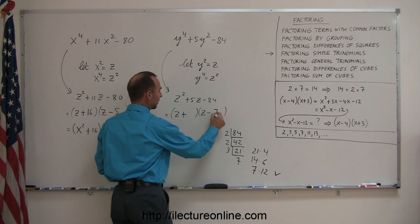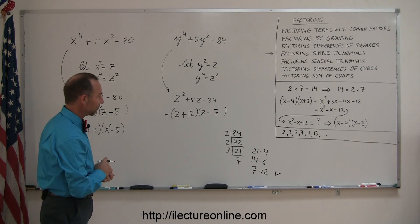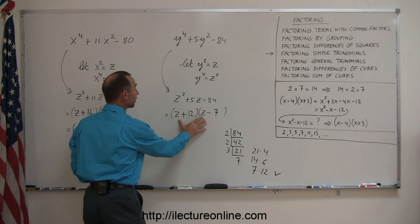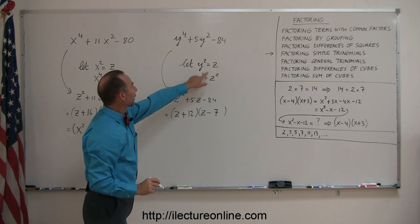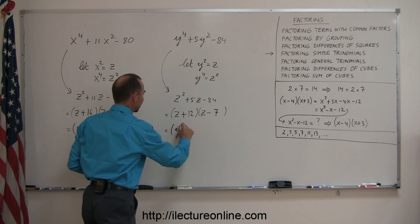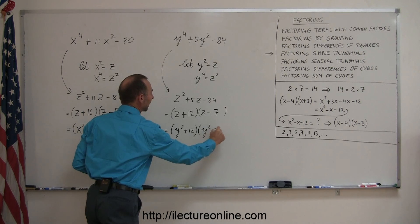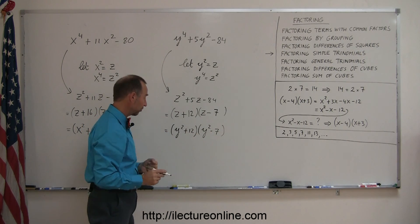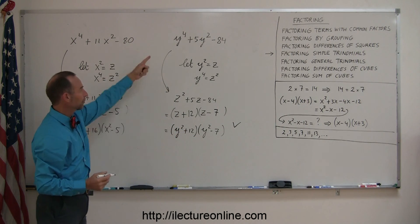So I need a negative 7 and a positive 12, and that's the factored form of this problem. But we're not done yet, because I used z's and I have to convert back to y's. Instead of z, I write what z equals in terms of y, which is y squared. So this is equal to y squared plus 12, and this is equal to y squared minus 7. A quick check to make sure this is not the difference of squares — it's not — so that's my final answer, the factored form of the original problem.